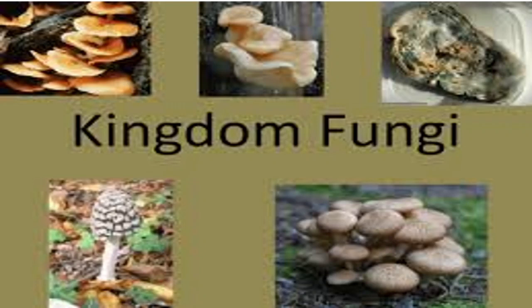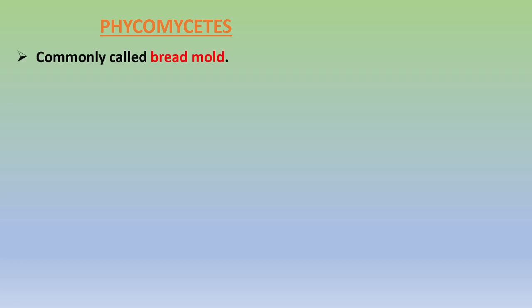The four classes are Phycomycetes, Ascomycetes, Basidiomycetes, and Deuteromycetes. Today we will talk about the first class, Phycomycetes, which is considered the lower group of the kingdom due to their most simplified nature. They are commonly called bread mold, which grows upon bread pieces.